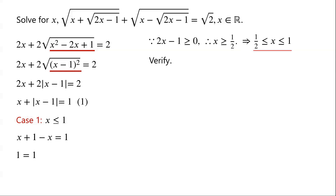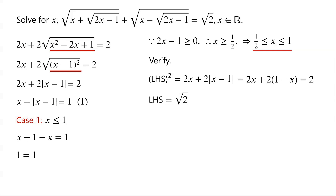Now we verify whether this is a solution of the original equation. From above, we know that the left hand side of the equation squared equals 2x plus 2 times the modulus of (x−1). As x is less than or equal to 1, this can be written as 2x plus 2 times (1−x), which is 2. So the left hand side equals √2, which equals the right hand side. So x ∈ [1/2, 1] is a solution of the original equation.